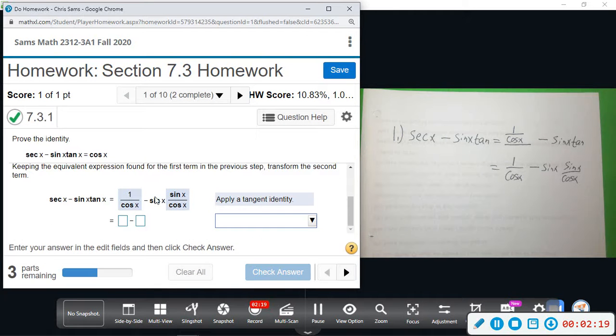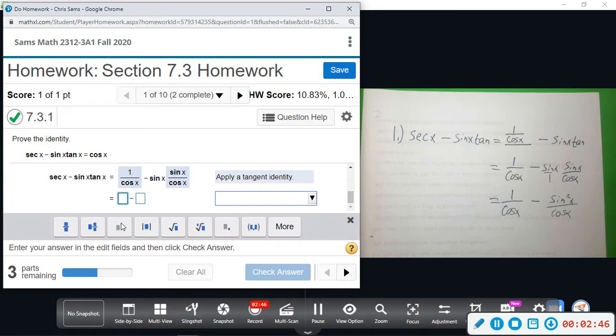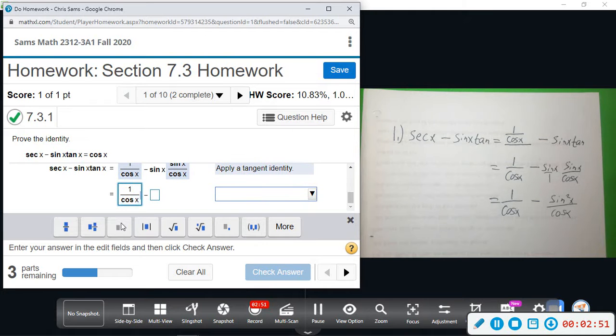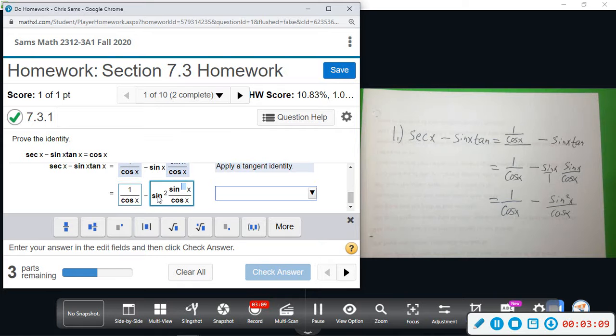Okay, so now we're going to distribute and simplify this. This is kind of like sine over 1, multiply straight across top, top, bottom, bottom. This gives us 1 over cosine x minus sine times sine, which is sine squared x over cosine x. So we have 1 divided by cosine x, and then sine squared x divided by cosine x. This is by multiplying the two factors together.